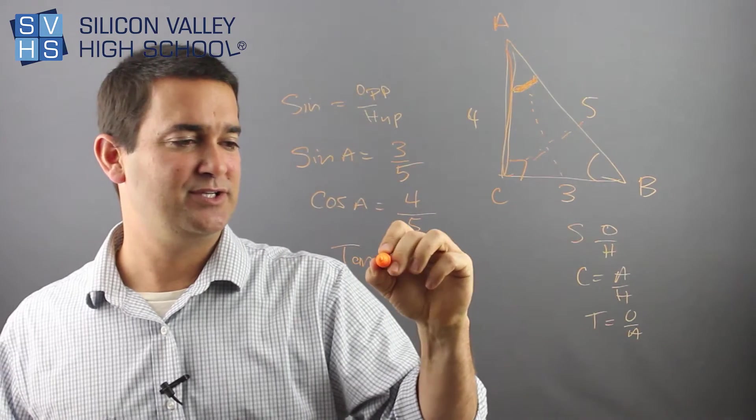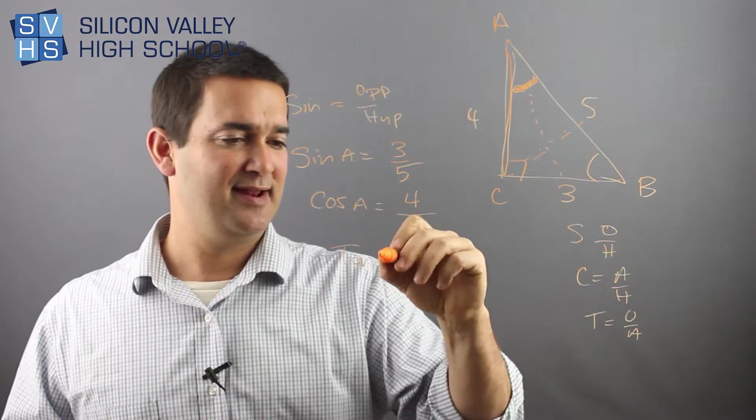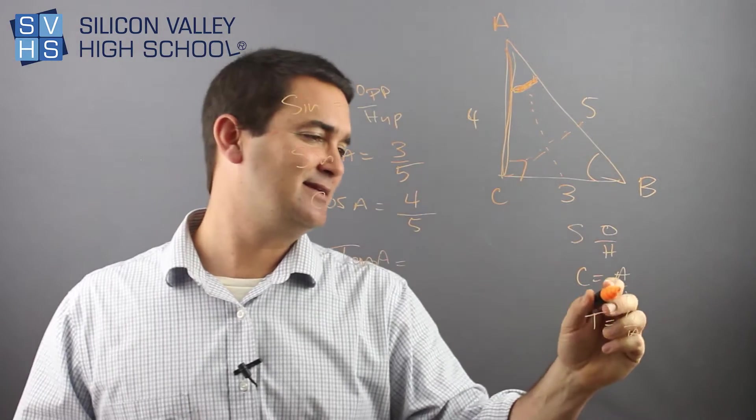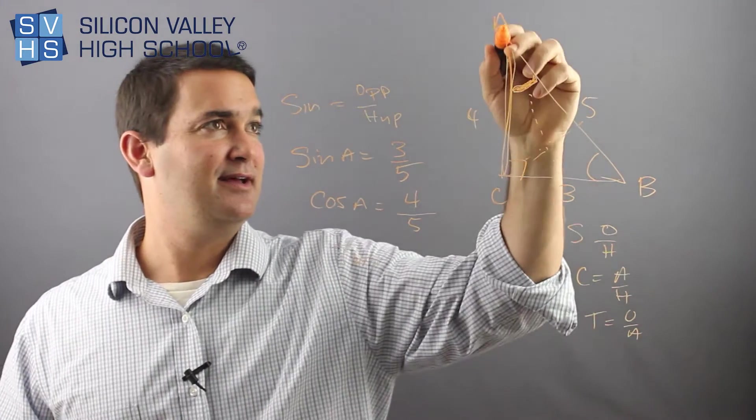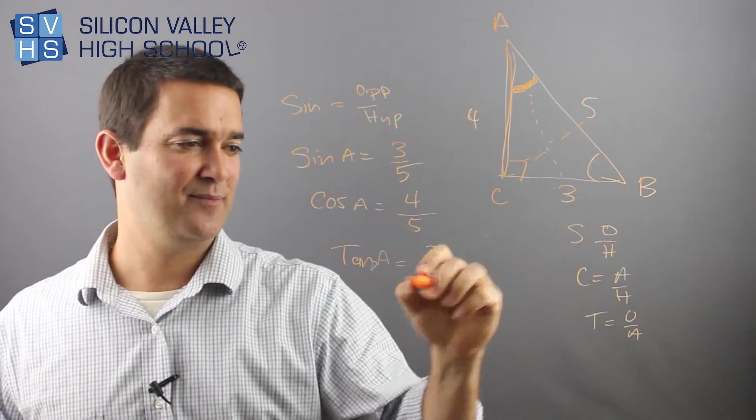And then you have tangent, which is, we'll call it tangent of A, right? And again, here you go. It is opposite over adjacent. Here's A. Opposite, 3 over adjacent. We already had that whole meeting is 4. Done.